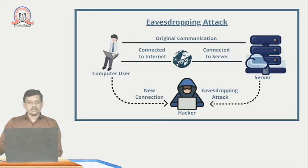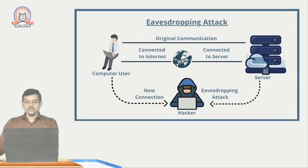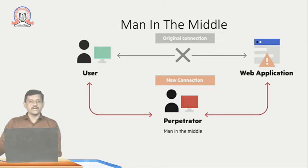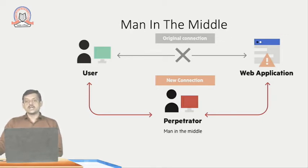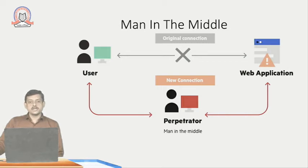Speakerphone functions can be activated remotely, allowing hackers to listen into an entire office without the inhabitants' knowledge. The next attack is Man in the Middle, also known as an MITM attack. This attack is a general term for when a perpetrator positions himself in a conversation between the user and the application. The goal is to steal personal information such as login credentials, account details, and credit card numbers. Targets are typically users of financial applications, SaaS businesses, e-commerce sites, and other websites where login is required.